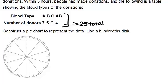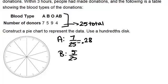So now we can figure out the percentages. For blood type A, there were 7, and 7 out of 25 is 28 percent, or 0.28. For blood type B, there were 5 donations, and 5 out of 25 is 0.2, or 20 percent.